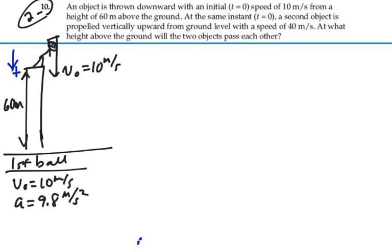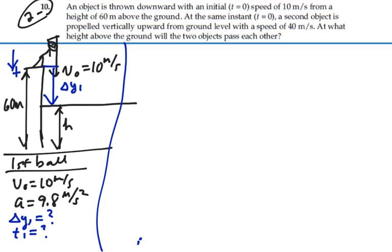It's going to pass the other ball at some particular height, which we don't know, so we're going to just call that height h. However, in our throw downward, we will have a displacement, let's call it delta y1, that reaches to that height. We don't know what that is, and we don't know what our time is to that point. We also don't know what our final velocity will be to that point as well.